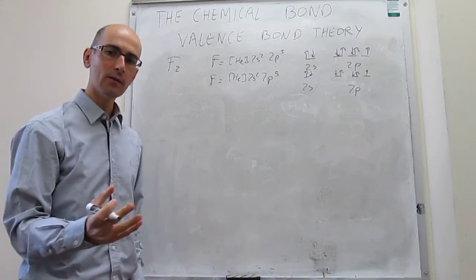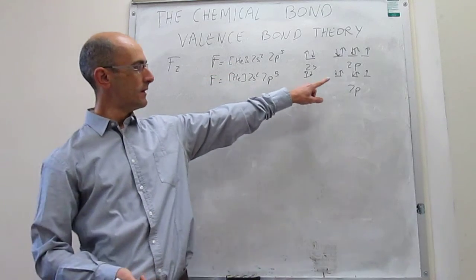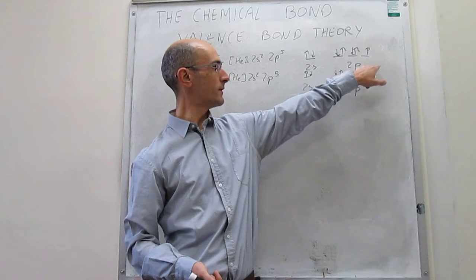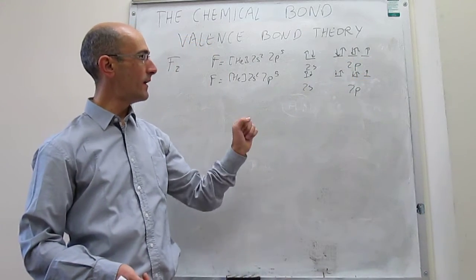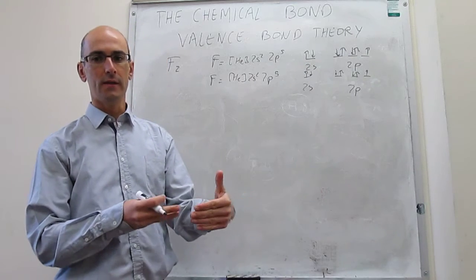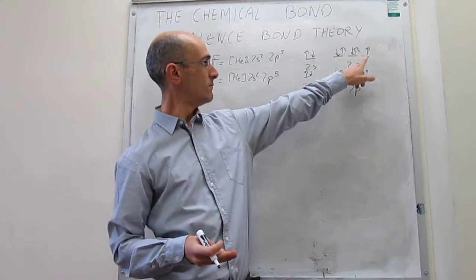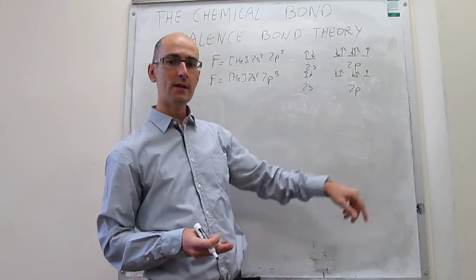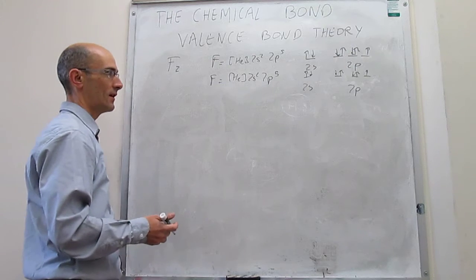Looking at the box configuration, it's clear that in the F₂ molecule each atom has one 2p orbital that is singly occupied. So it seems natural that the overlap to form a bond would happen between these singly occupied atomic orbitals.